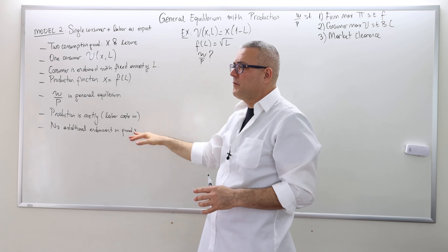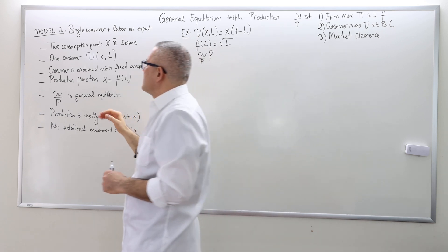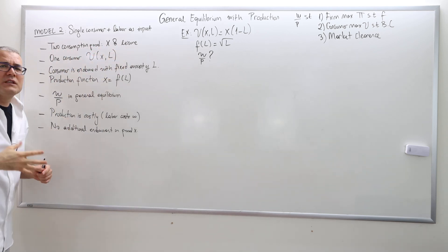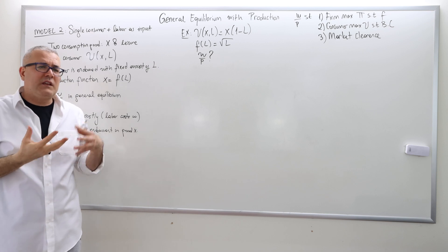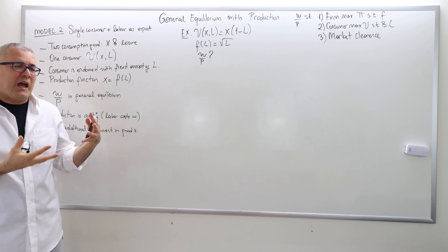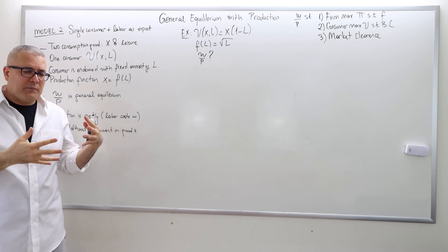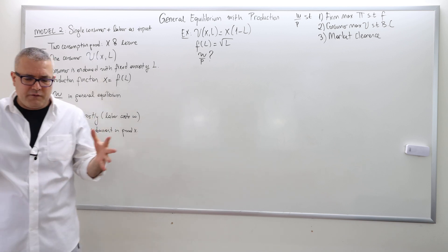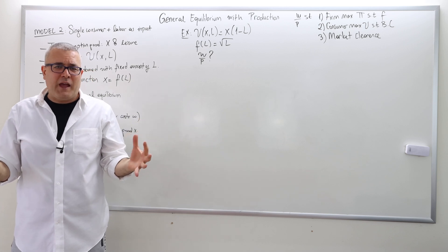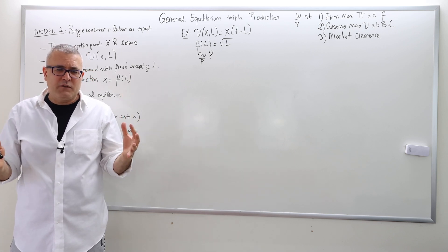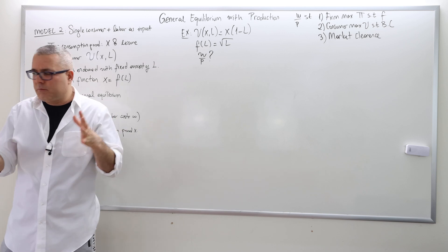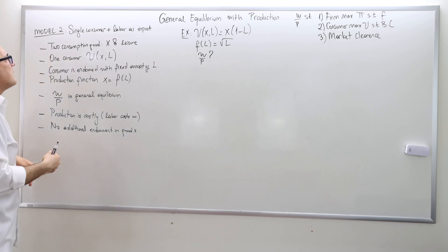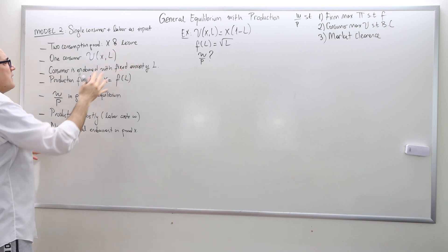Here are the model-specific assumptions and the problem-specific assumptions. We have two consumption goods: good X, and then the second good is leisure. Leisure is basically what's left from labor. You have a limited number of hours — an endowment — and then you put in some labor. So your endowment minus labor is the leisure that you can consume and enjoy.